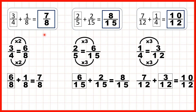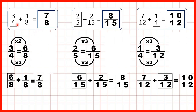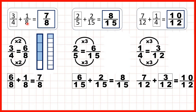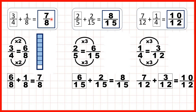We can show what we did with fraction bars. First we had three quarters and we were adding one eighth. We changed three quarters into six eighths, which meant that we could add the one eighth to get seven eighths as our answer.